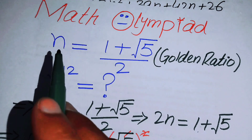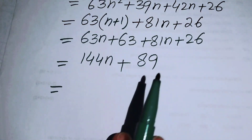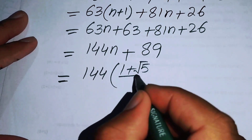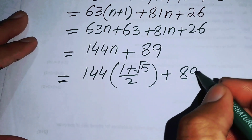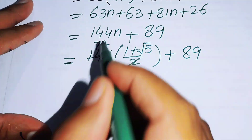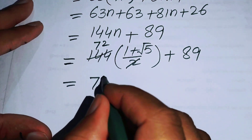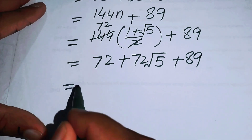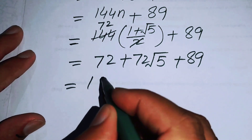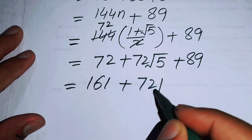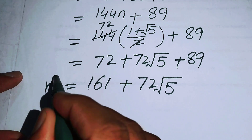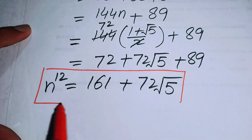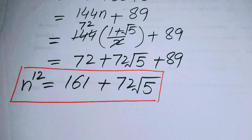Finally, we substitute n = (1+√5)/2 back in. We get 144·(1+√5)/2 + 89 = 72(1+√5) + 89 = 72 + 72√5 + 89 = 161 + 72√5. So n^12 = 161 + 72√5. That is our final answer. Thank you so much for watching — please subscribe to my channel for more exciting videos.